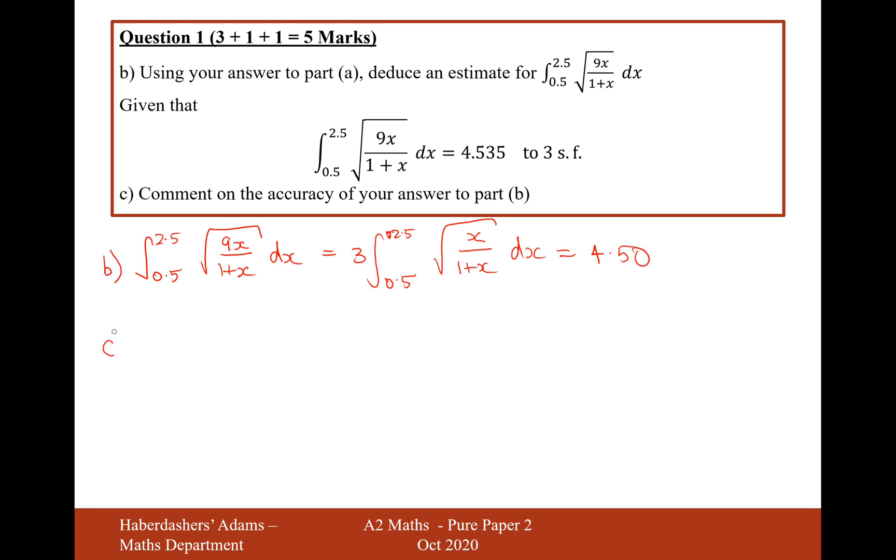And then moving on to part c, comment on the accuracy of your answer to part b. Well, 4.535, that's pretty accurate compared to 4.50, so the answer is accurate to two significant figures. 4.5 is the answer to both of them here, but not to three significant figures, so it's correct to two significant figures.